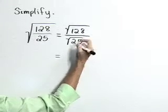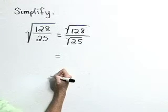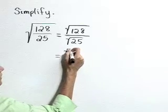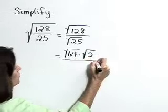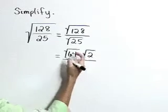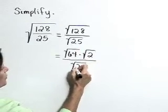A perfect square factor of 128 is 64. So let's write that as the square root of 64 times the square root of 2. In the denominator, let's leave that as the square root of 25.